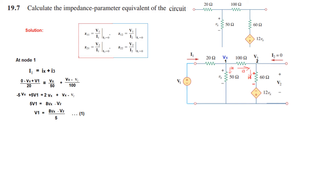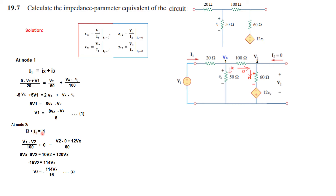Now moving to node 2: I3 is entering, I2 is entering, and I4 is leaving, so I3 plus I2 equals I4. I3 is (Vx minus V2) over 100, and I2 is 0. For I4, the current direction is top to bottom, and the dependent source also contributes current in the same direction, so I4 is (V2 minus 0 plus 12Ix) over 60. Simplifying, we find V2 in terms of Vx — this is equation number 2.